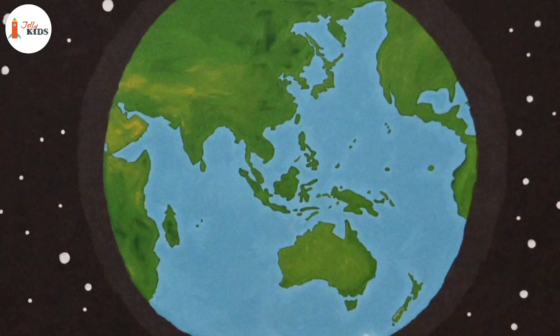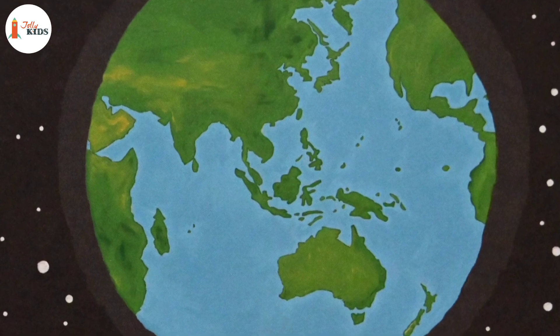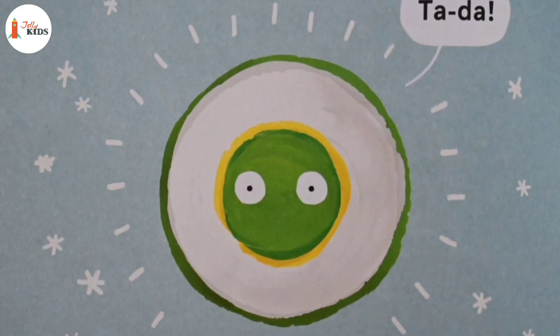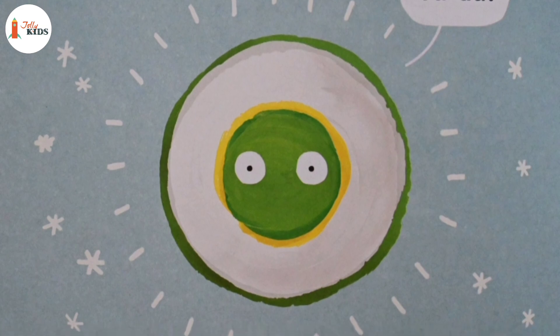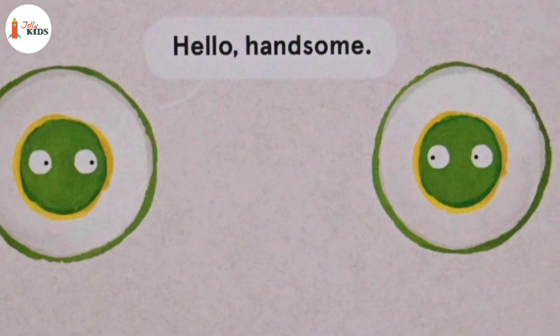Then one day, many moons ago, the Earth was not too hot and not too cold. That warm water was just right for the magic to happen. And just like that, life came into existence. The first life form was pretty simple. She couldn't see, hear or wear a party hat. But she had one very special trick. She could make copies of herself. This is where all of our stories start.